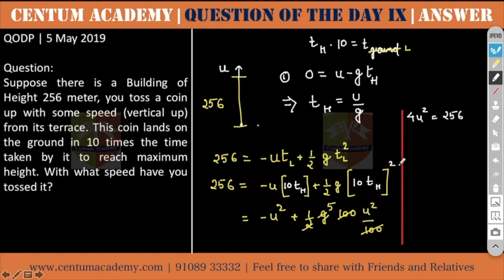Now u squared is 256 by 4, that is 16 by 2 is equal to u, that is 8 meter per second. With what speed have you tossed it? You tossed it with 8 meter per second.